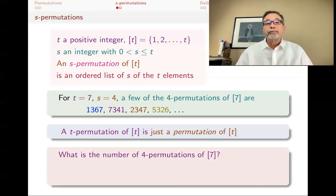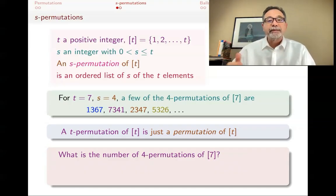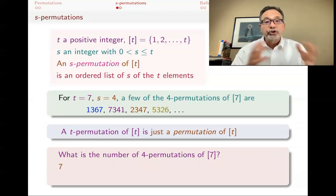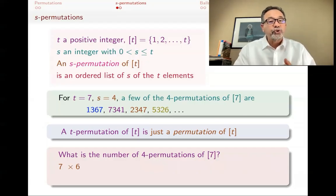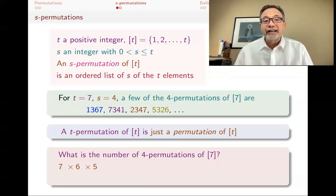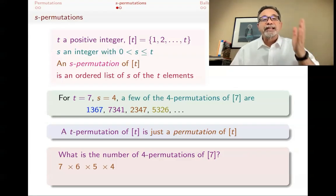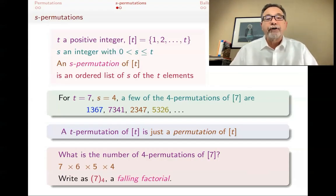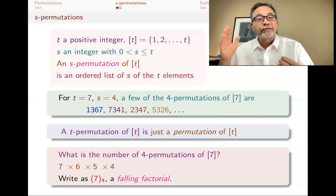How many of those are there? What's the number of four-permutations of bracket seven? I need to pick four elements. I have four spots — a first spot, a second spot, a third spot, and a fourth spot — and I've got to pick an element of one through seven for each one of those spots. For the first spot, I have seven choices. When I chose that, I can't choose that number again, so now I've got six numbers left — that's how many choices I have for the second spot. After picking the first two numbers, I only have five choices for the third, and for the last one I will have four choices. So the total number of four-permutations of seven is a truncated factorial: seven times six times five times four.